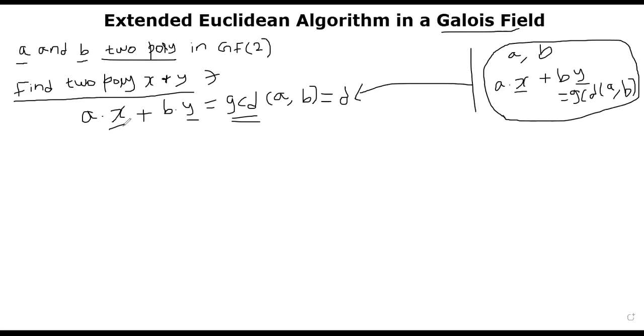Meaning A times X plus B times Y equal to D, where A and B are polynomials. We will find two other polynomials X and Y, such that A times X plus B times Y equal to D. We will use this to compute the inverse in the next segment.